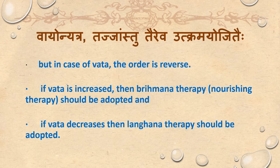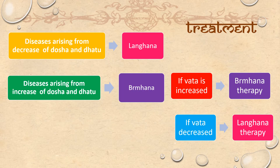However, the case of Vata is reverse. If Vata is increased, then Brimhana therapy should be adopted. If Vata decreases, then Langhana therapy should be adopted. Disease arising from decrease of Doshas and Dhatu — treatment is Langhana. Disease arising from increase — treatment is Brimhana. Vata increased: Brimhana therapy; Vata decreased: Langhana therapy.